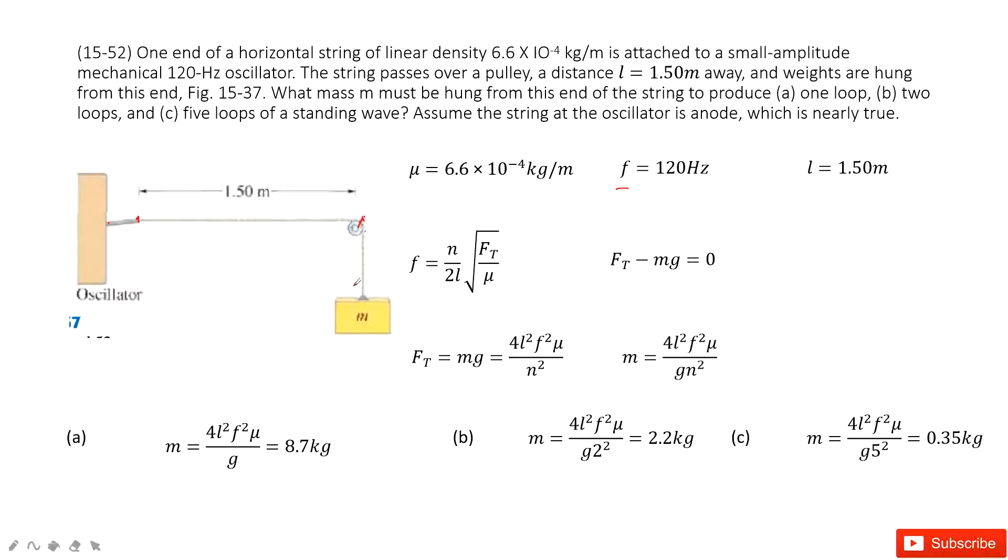And also the linear density for this string is given. And overall, it is connected with the mass. The mass we need to find. So we need to find the mass of this end to produce one loop, two loops, five loops of standing waves.